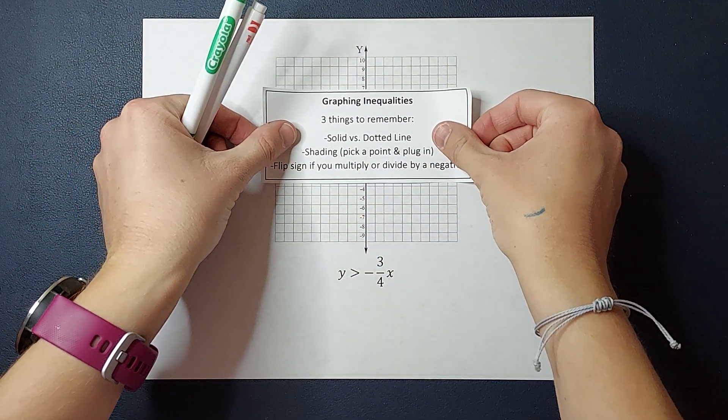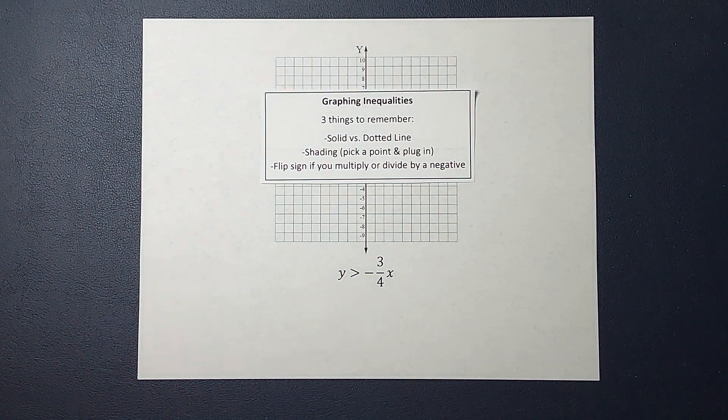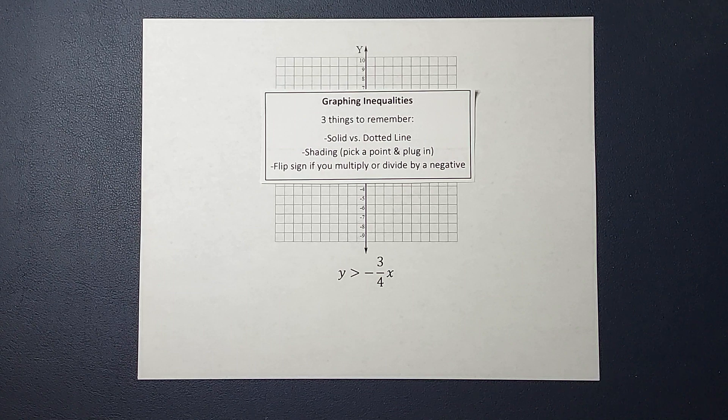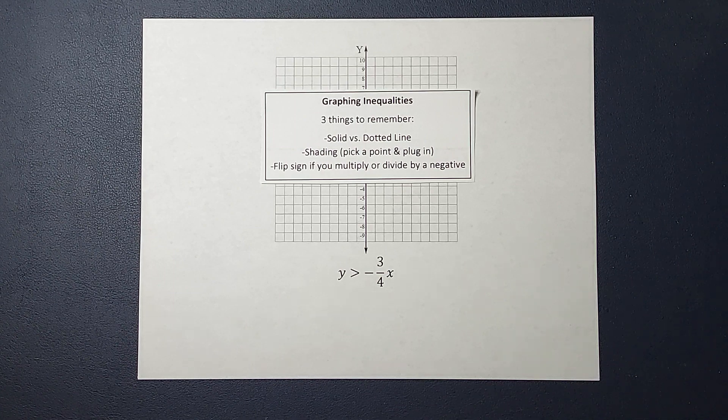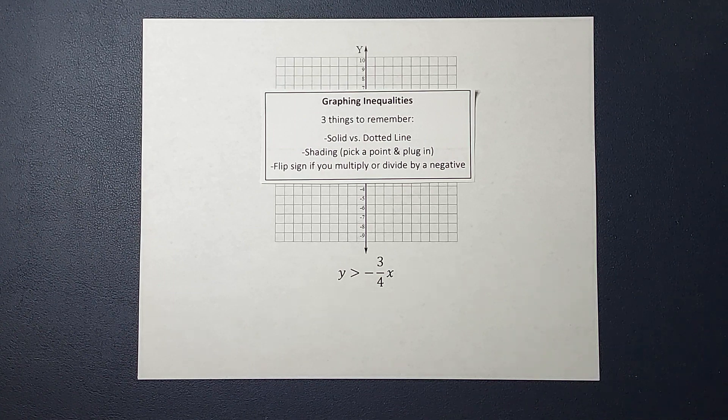The three things are solid versus dotted line, shading, and we flip the sign if we multiply or divide by a negative. Stick with me if you don't know what I'm talking about.